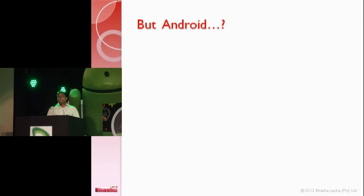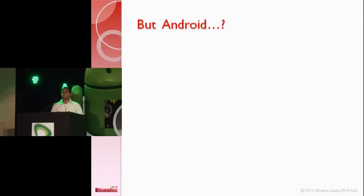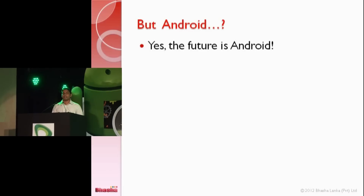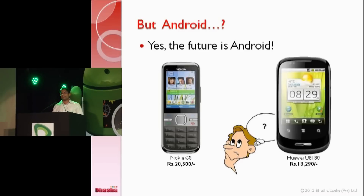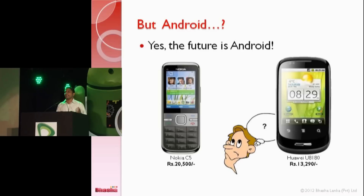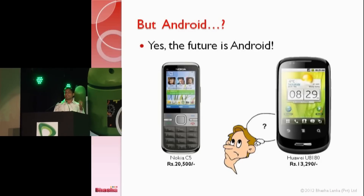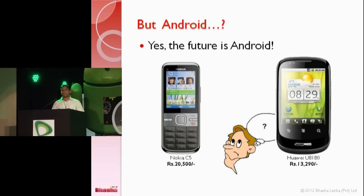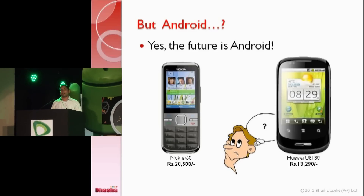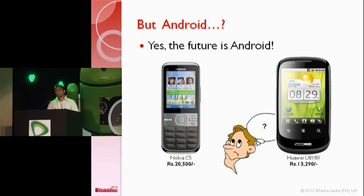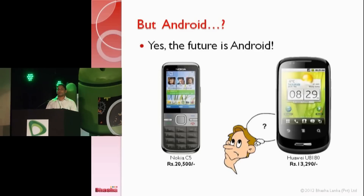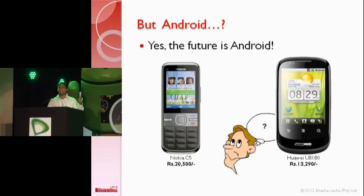You may think, what about Android? I say yes, because the future is Android. You can see these two comparisons. A new user buying a mobile phone has two options: a non-smartphone with hard keys, or a smartphone powered by Android with a touchscreen and high-end technologies. If you consider the price, the smartphone is 13,000 rupees while the non-smartphone is 20,000 rupees. So you can decide what the future of this industry will be.